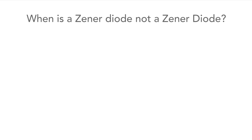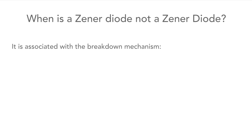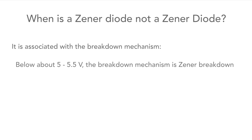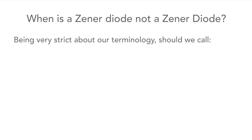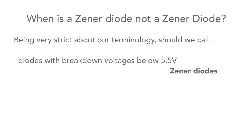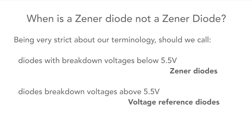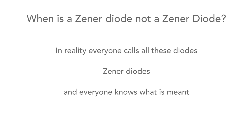So when is a Zener diode not actually a Zener diode? Well, it all boils down to the breakdown mechanism in the diode. Below about 5 or 5.5 volts, the breakdown mechanism is what's called Zener breakdown. Above this, another form of breakdown called avalanche breakdown progressively dominates. Links with more details can be found in the video description. So below about 5 volts the diode is a true Zener diode, but above this it should probably be referred to as a voltage reference diode. In practice, we all refer to these diodes, whatever the voltage, as Zener diodes, and everyone knows what we mean.